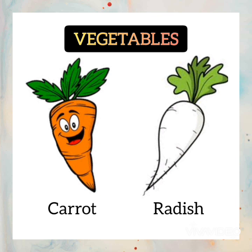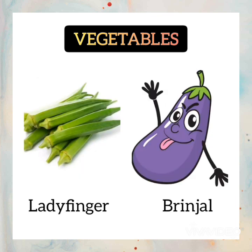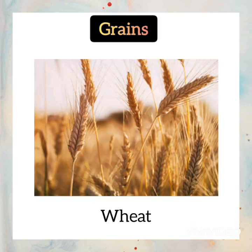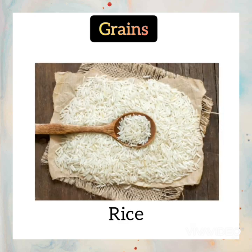Vegetables: examples of vegetables are tomato, onion, potato, cauliflower, carrot, radish, ladyfinger, and brinjal. Grains: examples of grains are wheat and rice.